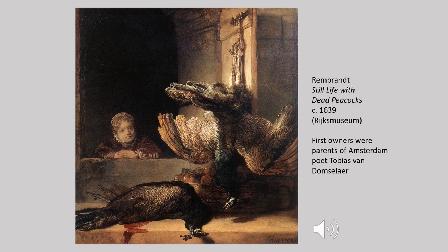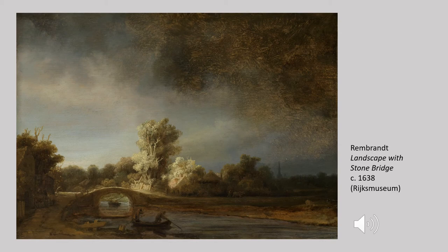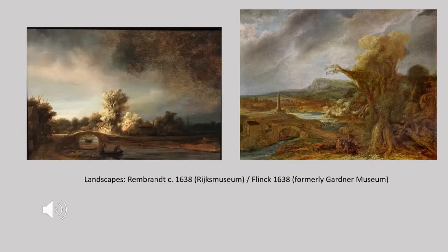Rembrandt also attempted a completely different subject type — still life — of which only one survives, belonging to an Amsterdam family in the 17th century. From the late 1630s into the mid-1650s he was also interested in landscape; one of his most beautiful landscape paintings is now in the Rijksmuseum. This shows that he was not an artist who specialized in one particular subject type as so many contemporaries did — he tried his hand at a variety of things and excelled at all of them. His diversity was absorbed by his students, thereby expanding and extending the reach of his brand in the Amsterdam market.